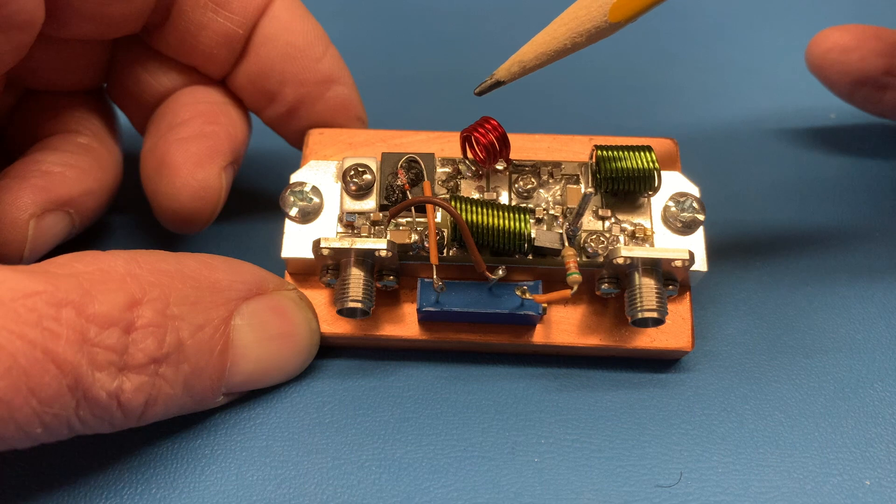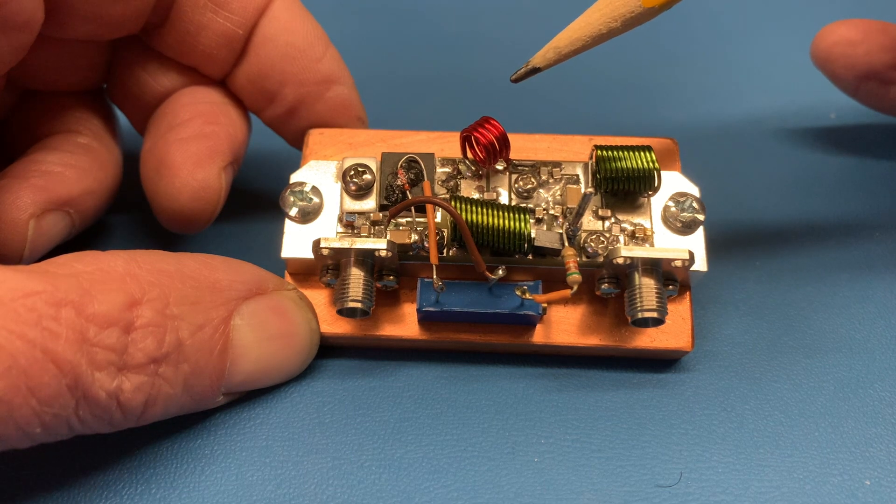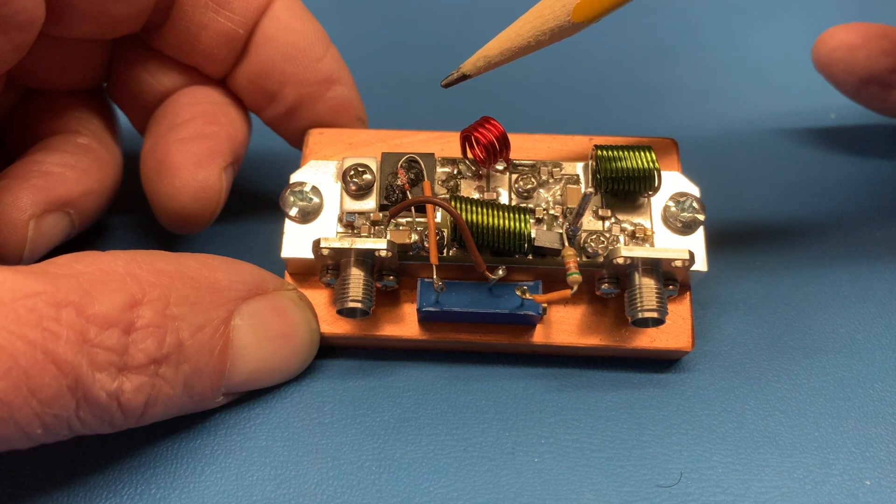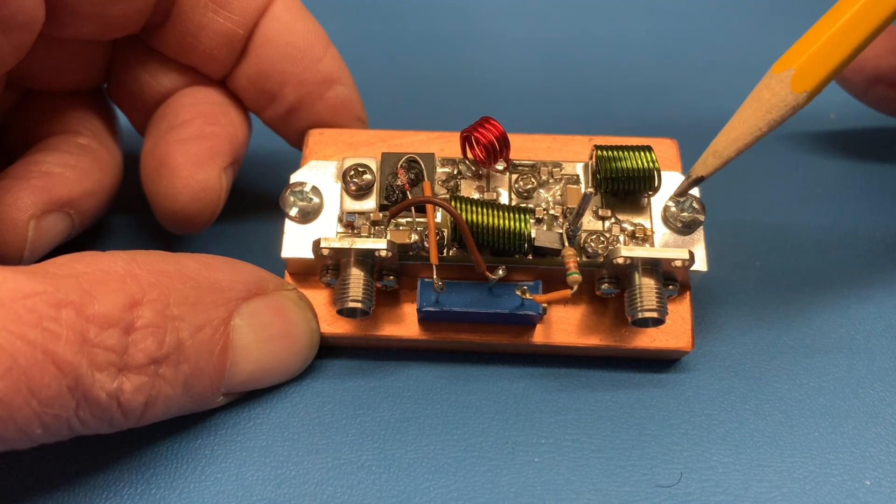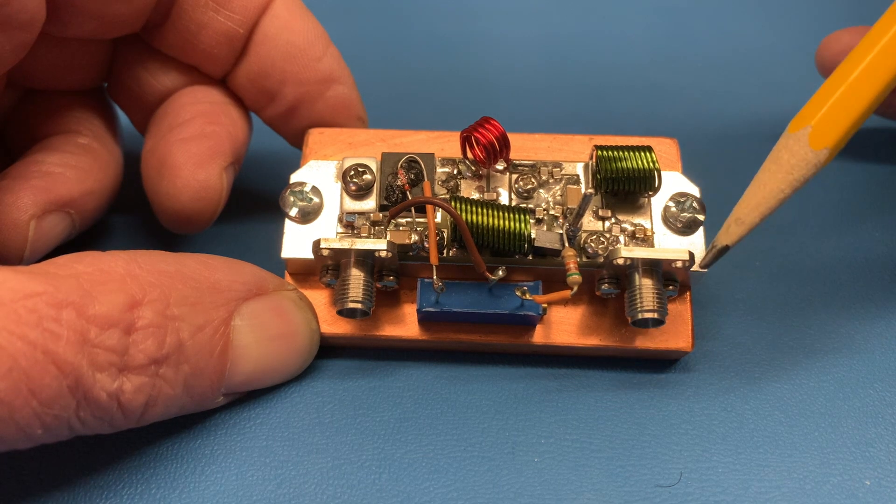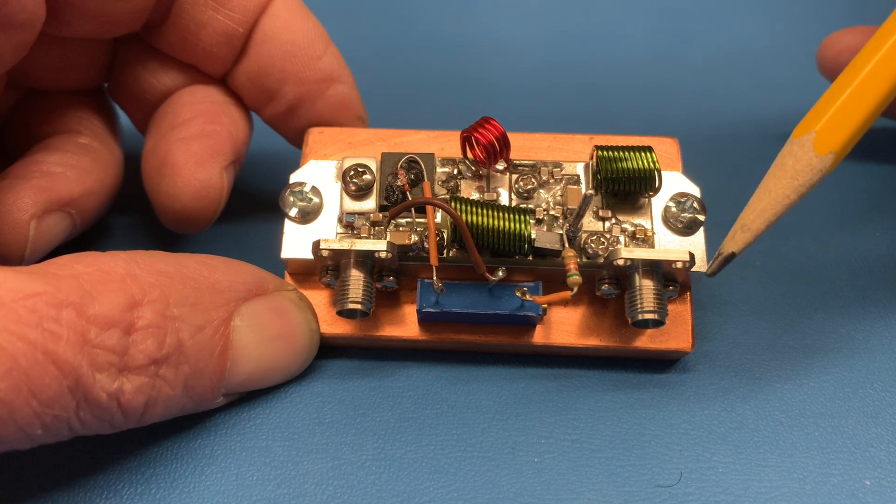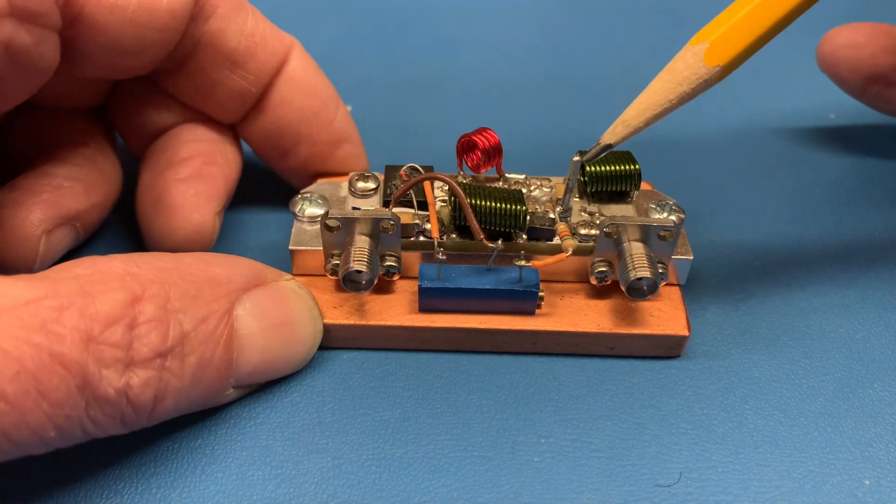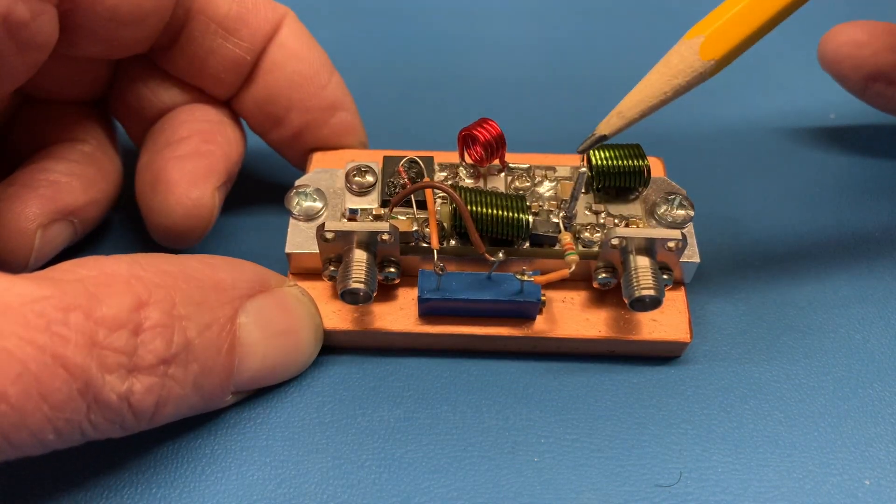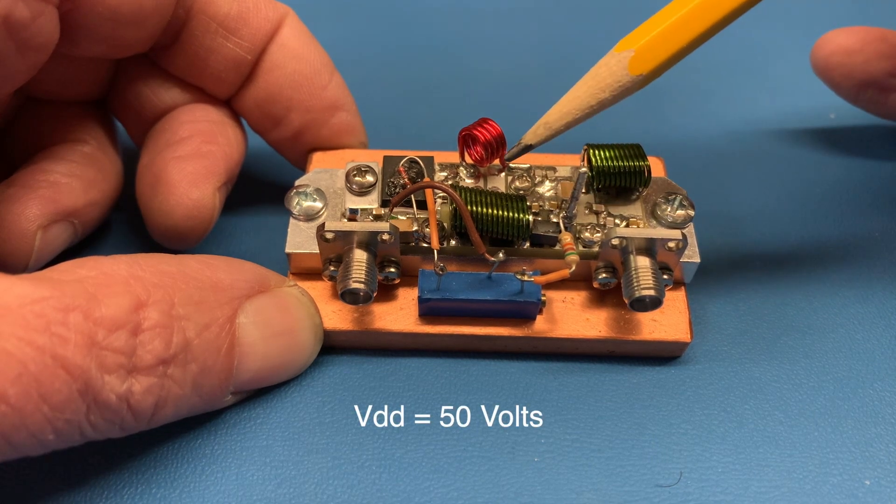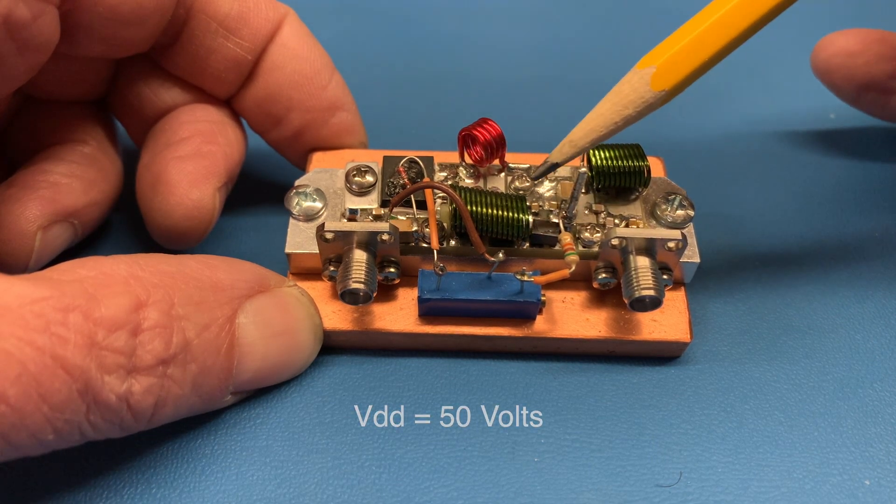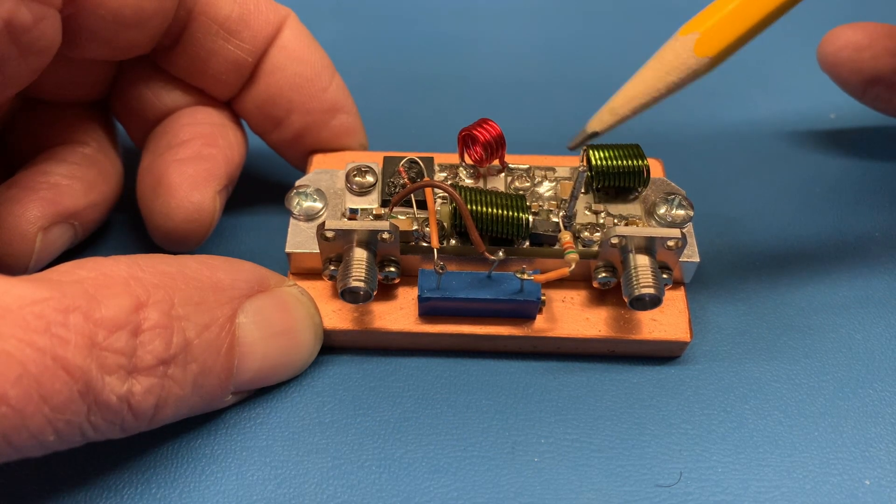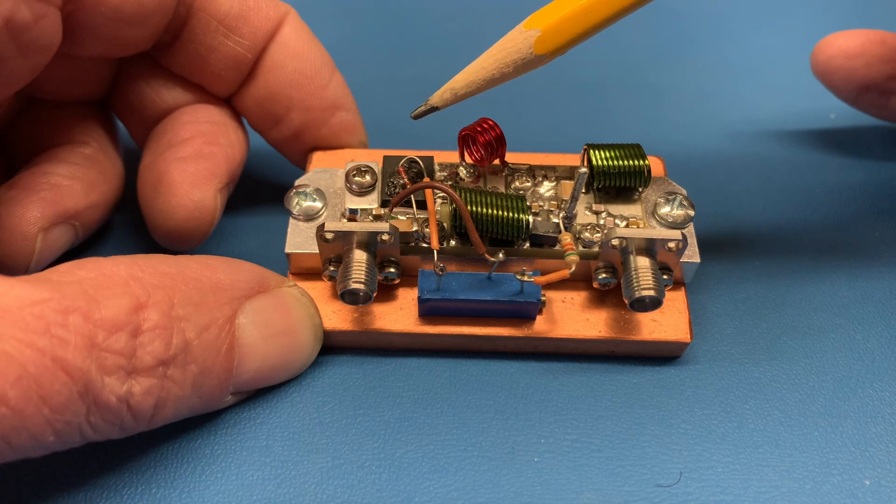On the output it goes through another impedance matching circuit that takes it from the relatively low impedance of the transistor up to a higher impedance which is 50 ohms for the output to go out to the antenna or out to the dummy load in this case. On the input for the DC, it comes in on this binding post here and goes through the green coil which acts as a choke before being fed into the drain of the FET.